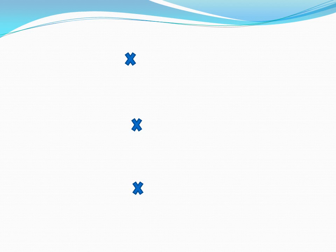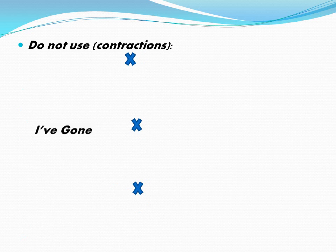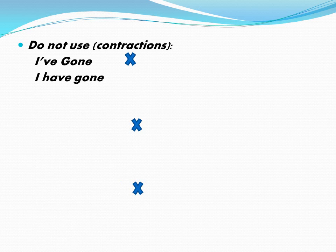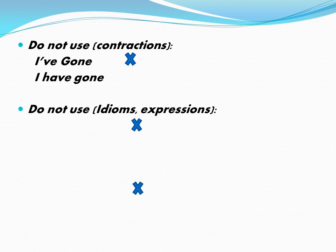In formal letters, we don't use contractions. Contractions are when we don't write the full word. For example, instead of writing 'I've gone,' we must write 'I have gone' because it is a serious letter. Another example: instead of 'didn't,' you must write 'did not.' So we do not use contractions in formal letters.